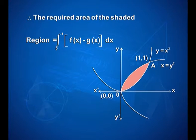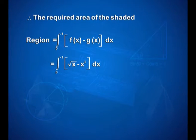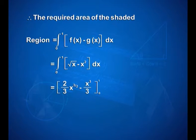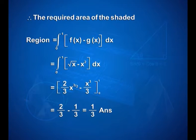Therefore, the required area of the shaded region is equal to integral 0 to 1 of [f(x) minus g(x)] dx, that is equal to integral 0 to 1 of [square root of x minus x square] dx, which equals [2/3 x to the power 3/2 minus x cube upon 3] with limits 0 and 1. On applying the limits, we get a simplified answer of 1/3 square units.